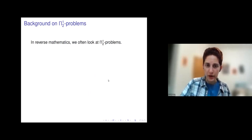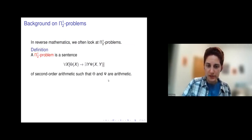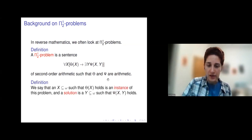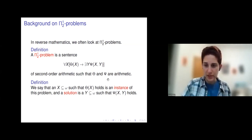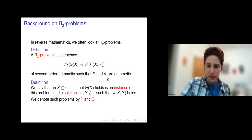To start, we need some background on Π¹₂ problems, which we often look at in reverse math. A Π¹₂ problem is a sentence 'for all x, θ(x) implies there exists a y, ψ(x,y)' of second order arithmetic, where θ and ψ are arithmetic. A subset x of ω such that θ(x) holds is an instance of a Π¹₂ problem, and a solution is a subset y of ω such that ψ(x,y) holds. We typically denote Π¹₂ problems by P and Q.